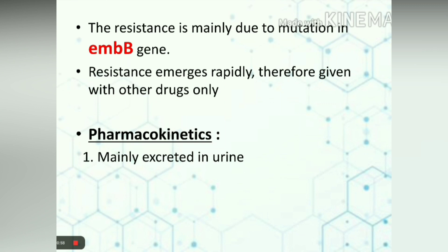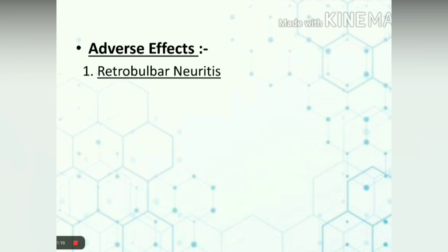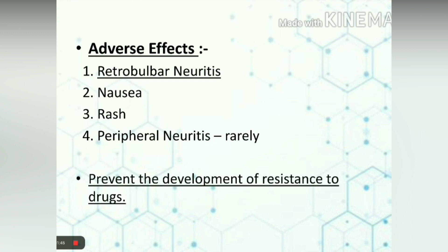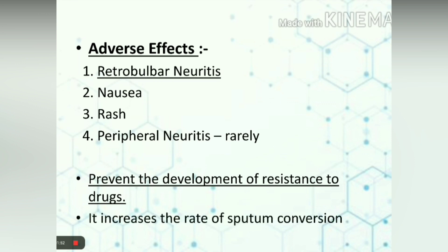Pharmacokinetics: ethambutol is mainly excreted in urine, therefore dose adjustment is required in cases of renal failure. Its half-life is 4 hours. Adverse effects: the most important dose- and duration-dependent toxic effect is retrobulbar neuritis, which causes loss of visual acuity, loss of color vision, and visual field defects. Therefore, periodic visual testing of these patients is required, and the drug should be stopped at the first indication of visual impairment. Note that this visual toxicity is reversible, but in young children it is relatively contraindicated as their visual assessment is quite difficult. Other adverse effects include nausea, rash, and rarely peripheral neuritis. The main reason for using this drug is that it prevents the development of resistance to other drugs and increases the rate of sputum conversion.